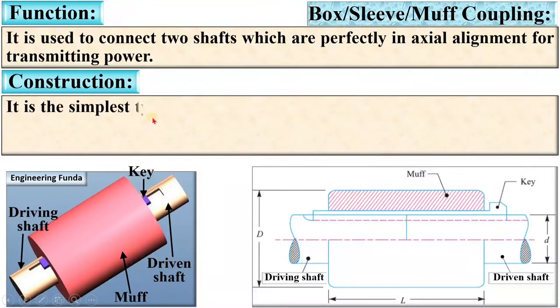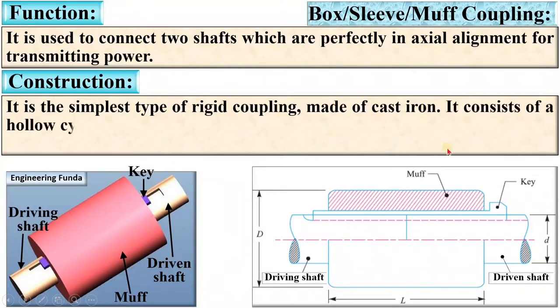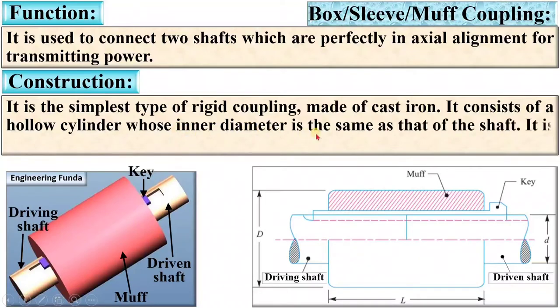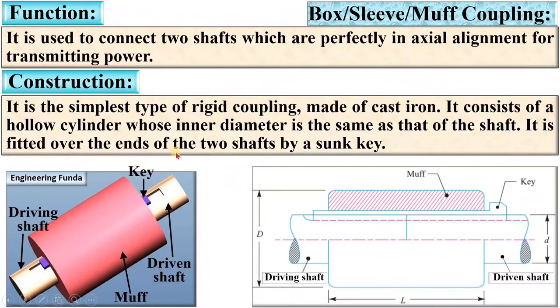Now the construction. It is the simplest type of Rigid Coupling made of Cast Iron. It consists of a hollow cylinder, here you can see, whose inner diameter is the same as that of the shaft. It is fitted over the ends of the two shafts by a sunk key, here you can see.